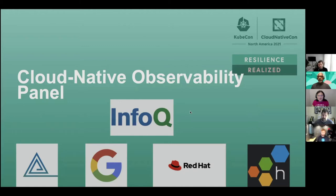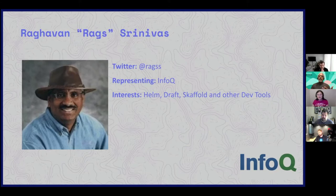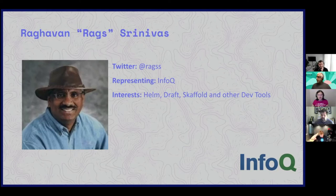Let me go around and introduce the panel. Starting with myself — I work for DataStack, but I also represent InfoQ and I have a bunch of interests, but primarily in the inner loop of development. How can you do this over and over again? Observability is very key to the inner loop because the more signals you have, the better and faster it is, and it helps developer productivity.